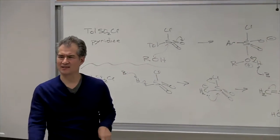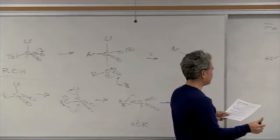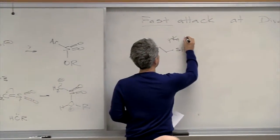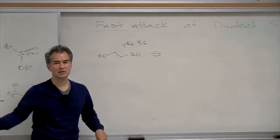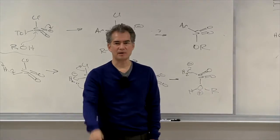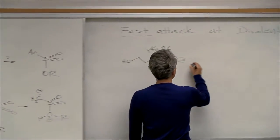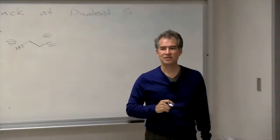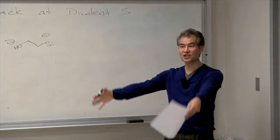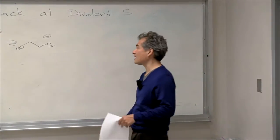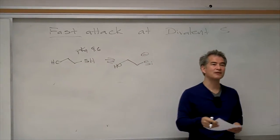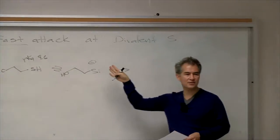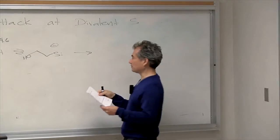The pKa for this thiol is about 9.6. That means if you put this in aqueous solution at physiological pH — somewhere between 7.2 and 7.6 — about 1% of your thiols are deprotonated. That may not sound like much, but when you're talking about 6.02 × 10²³ molecules, 1% is a lot of molecules. And this is a screaming hot nucleophile. So whenever you have thiols in aqueous solution around physiological pH, you've got enough thiolates that they totally dominate the nucleophilic character of your reaction conditions.